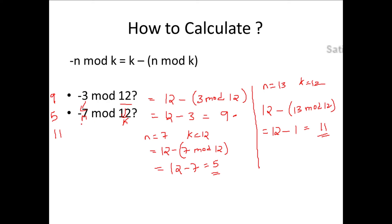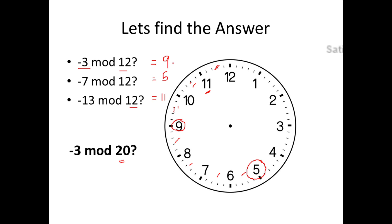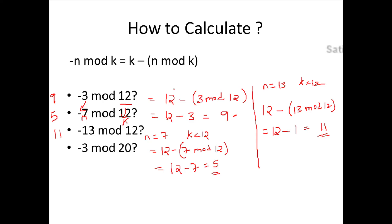These computations match our previous calculations using the clock. Now let's try an exercise: what is minus 3 mod 20? Here n is 3 and k is 20. Substituting: 20 minus (3 mod 20) = 20 minus 3 = 17. That's how you compute the modulo of a negative number. We've seen how to compute n mod k in previous lectures on modular arithmetic, and here we've seen how to compute minus n mod k using the formula k minus (n mod k). Thank you.